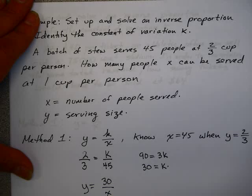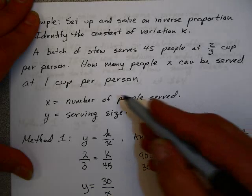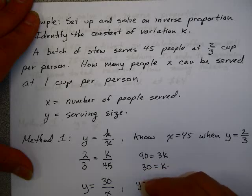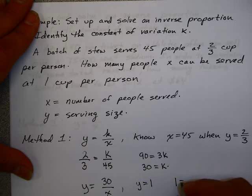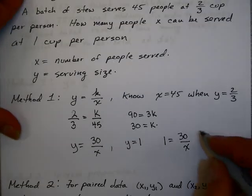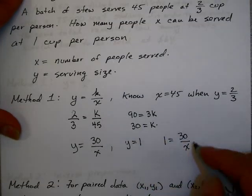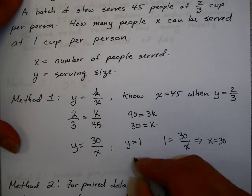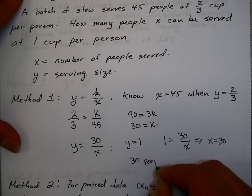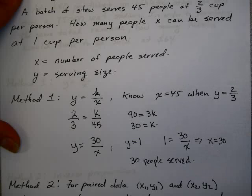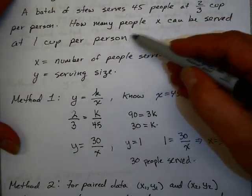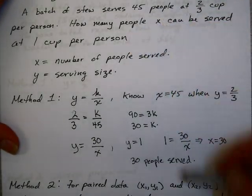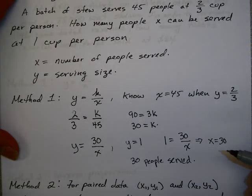The constant of variation is 30. Now, when the serving size is 1 cup (y equals 1), the equation gives x equals 30. So 30 people could be served. Notice that as the serving size increased, the number of people that could be served decreased — confirming this is inverse variation.